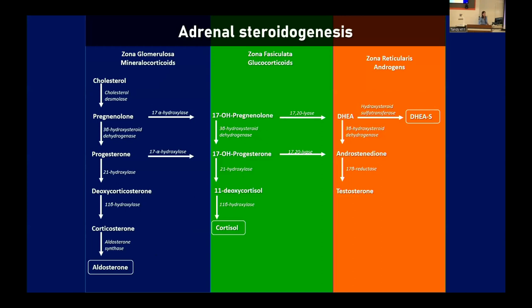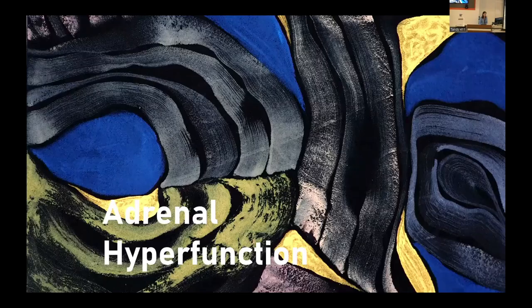Looking at the various layers in the cortex: the outermost layer, the zona glomerulosa, is responsible primarily for aldosterone production. Moving to the more internal layer, the fasciculata, is where your glucocorticoids are formed — the primary hormone there is cortisol. The innermost layer, the reticularis, is where androgens are formed; the primary hormone there is DHEAS. DHEA and DHEAS are the primary androgens produced. There is very little synthesis of testosterone in a normal adrenal gland.